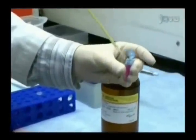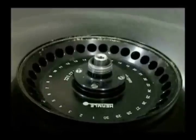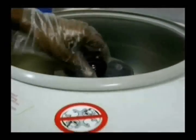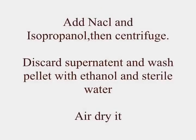Chloroform is added and incubated for about 2 minutes. It is then subjected to centrifugation for 20 minutes at 12,000 RPM. Transfer the aqueous layer to a new tube and add NaCl and isopropanol, then centrifuge. Discard the supernatant, wash the pellet with ethanol and sterile water, and finally dry it.